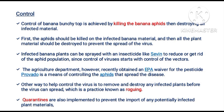Control: Control of Banana Bunchy Top is achieved by killing the banana aphid and then destroying all infected material. First the aphid should be killed on the infected banana material, and then all plant material should be destroyed to prevent the spread of the virus. Infected banana plants can be sprayed with insecticide like Sevin to reduce or get rid of the aphid population, since control of the virus starts with control of the vectors.